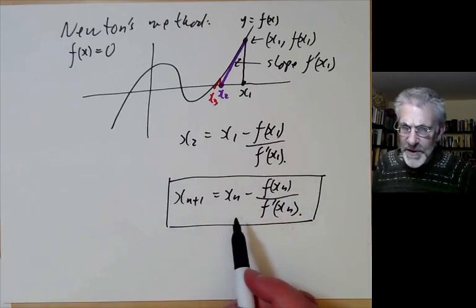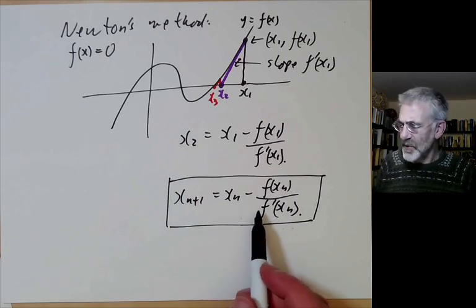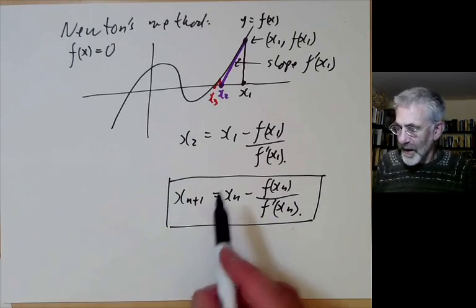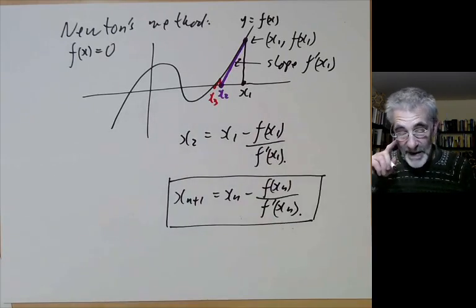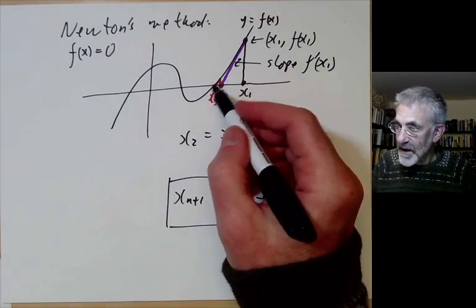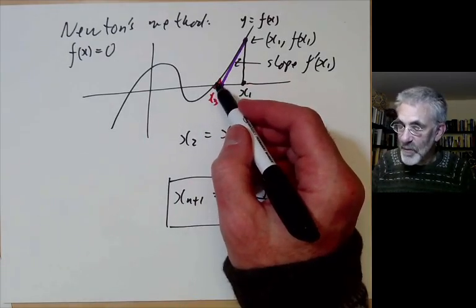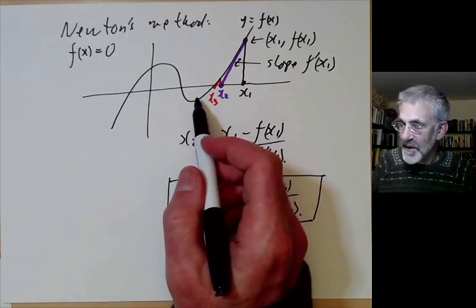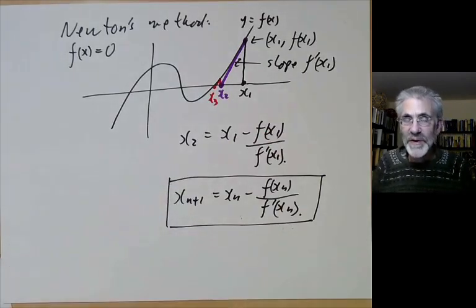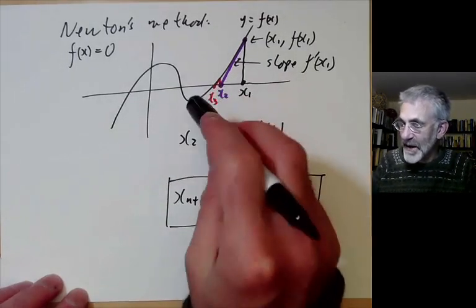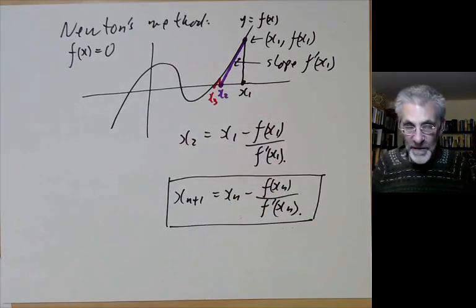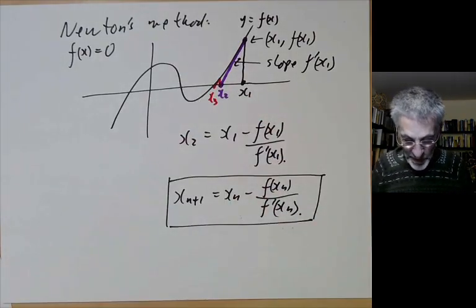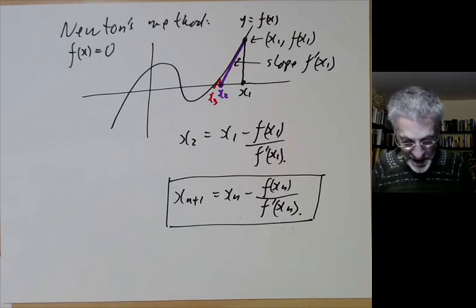Sometimes Newton's method converges to a root and sometimes it goes horribly wrong. If you start close to a zero of multiplicity 1, it works really well and converges very fast. If you start at some random point, the iterates can jump all over the place, end up in a cycle, or behave completely chaotically.